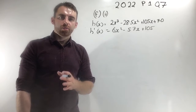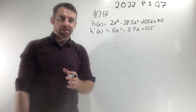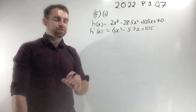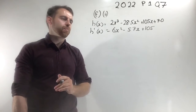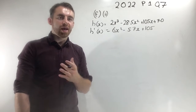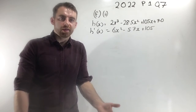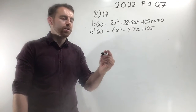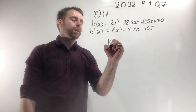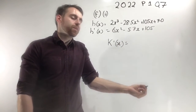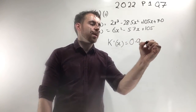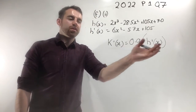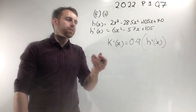In part f(ii), we're told Karen's heart rate is always 10% less than Hannah's, meaning it's 90% of Hannah's heart rate. So k(x) equals 0.9 times h(x). The same applies for the first derivative: k'(x) equals 0.9 times h'(x). Whatever Hannah's rate of change is, Karen's is 90% of that. That's all you need to get the marks for part ii.